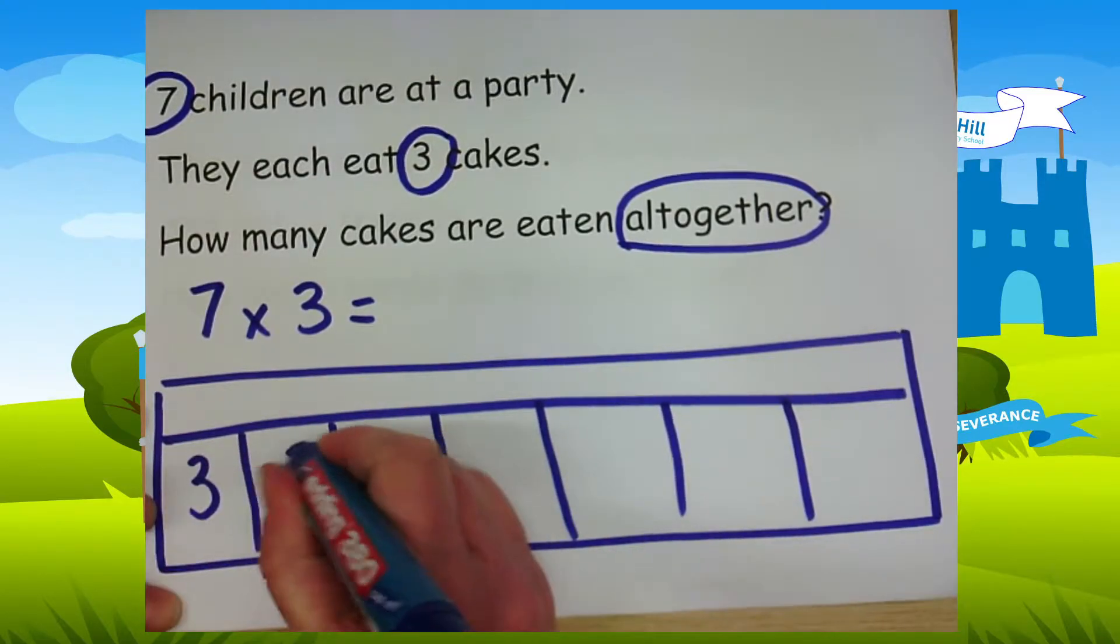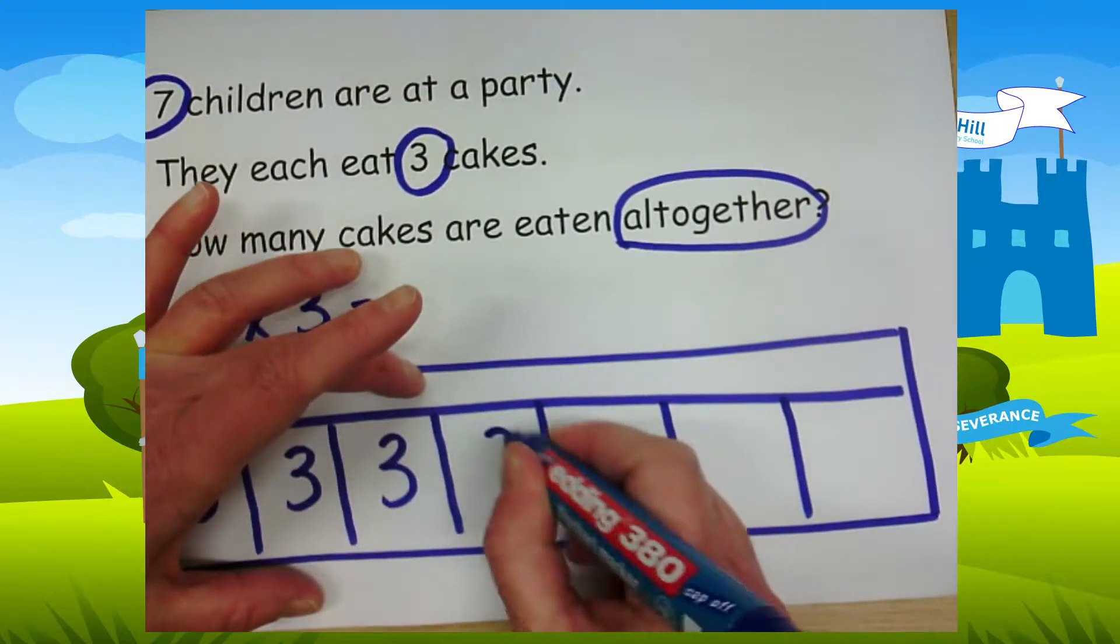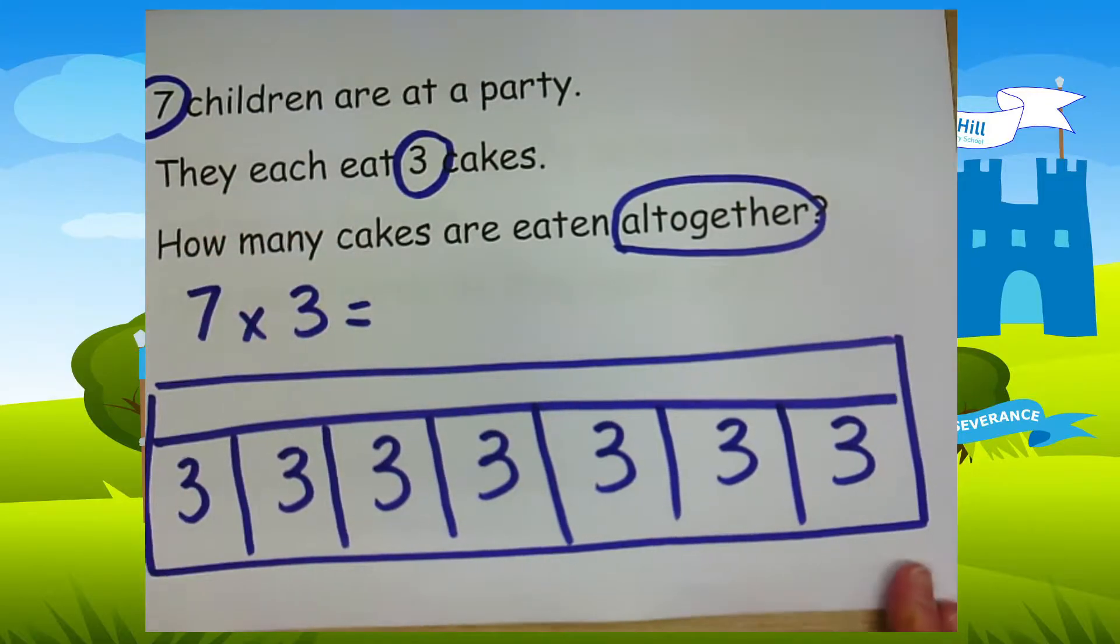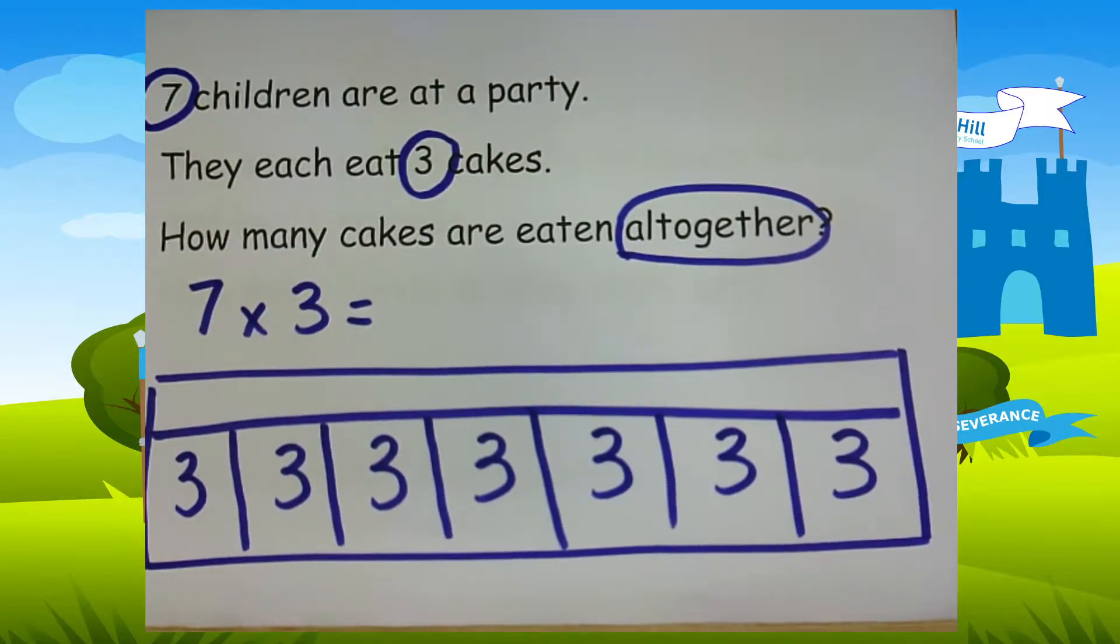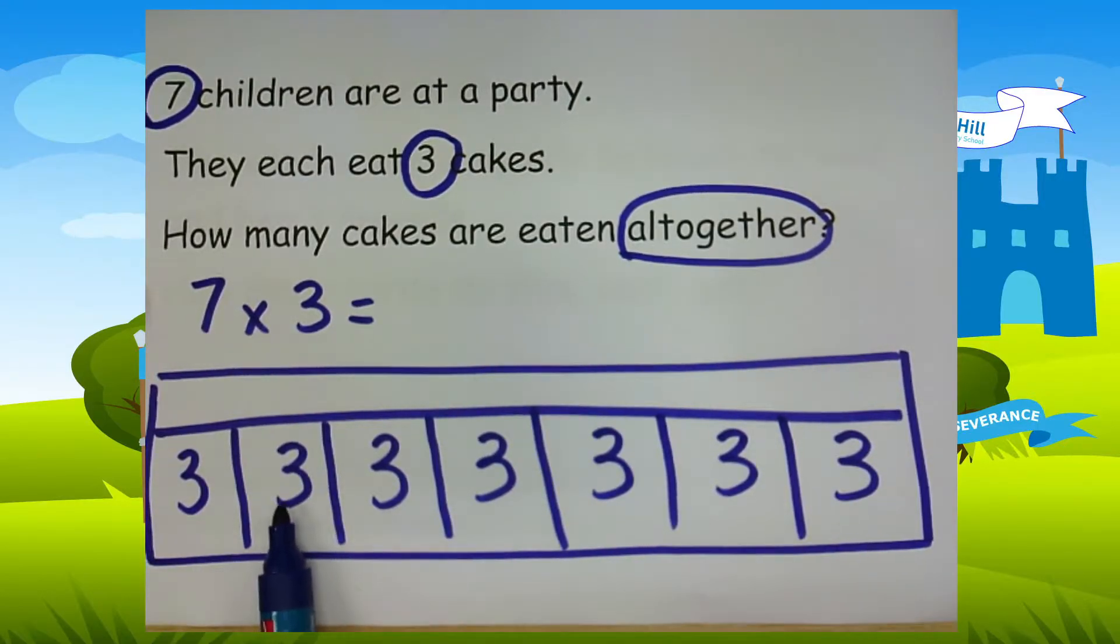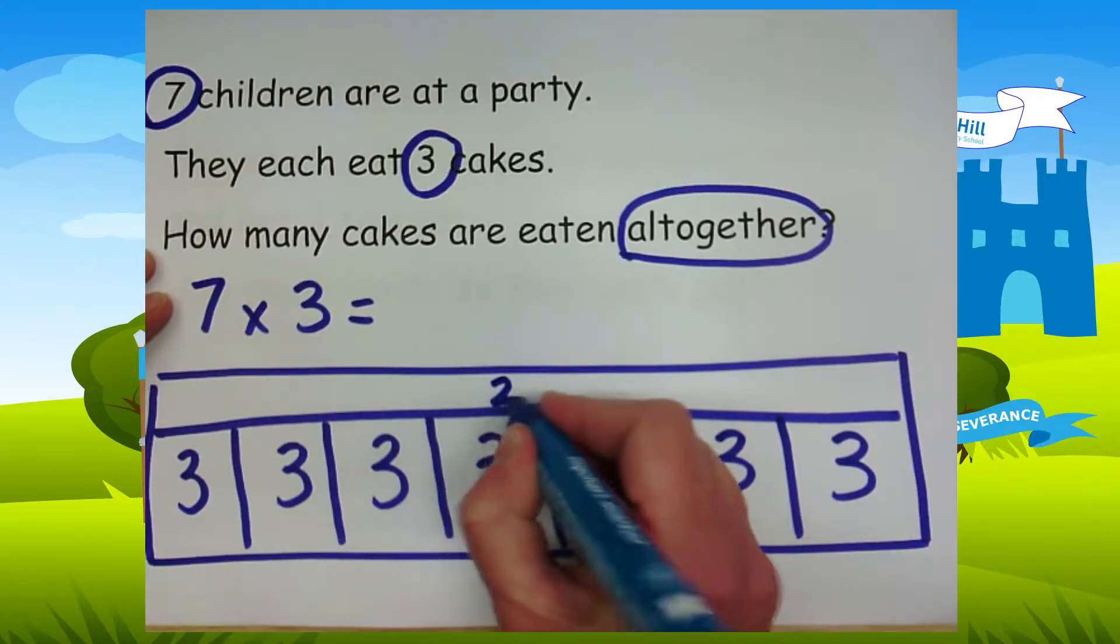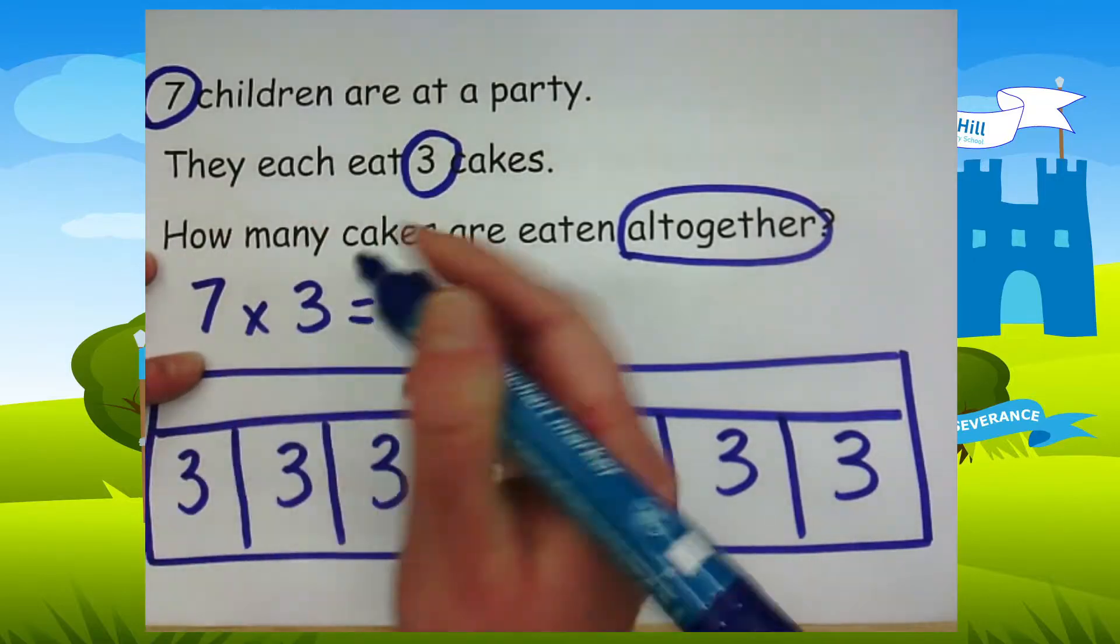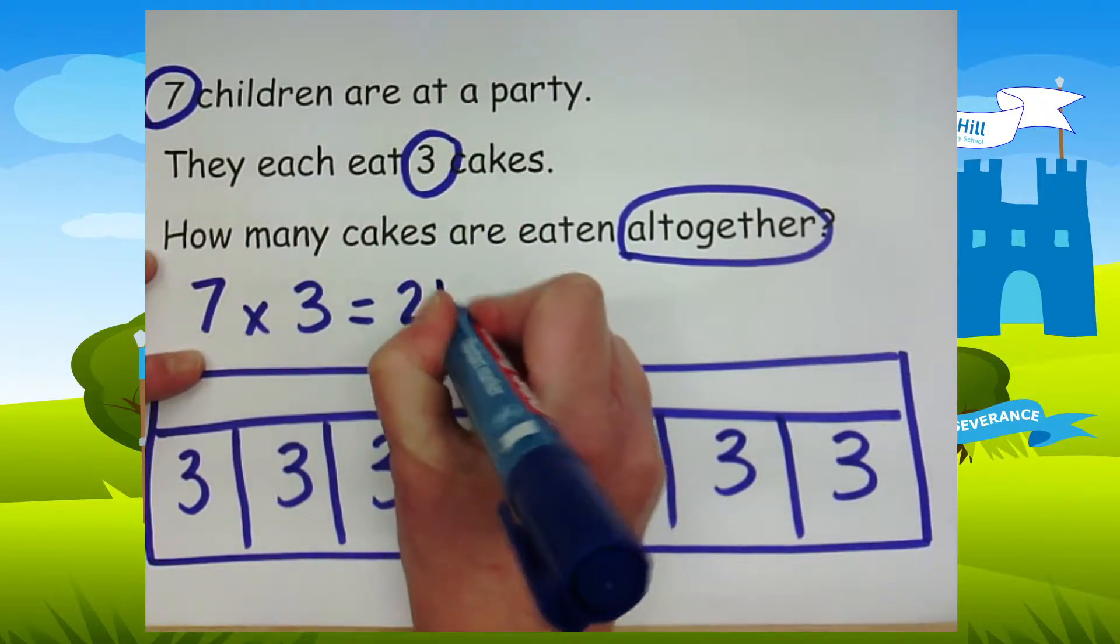So I'm going to write the number three. You can put dots in to represent the cakes if you find it tricky counting in threes. So we're going to count in threes to find out how many cakes there are all together. So three, six, nine, twelve, fifteen, eighteen, twenty-one. So all together, there are twenty-one cakes. So seven times three, seven multiplied by three is twenty-one.